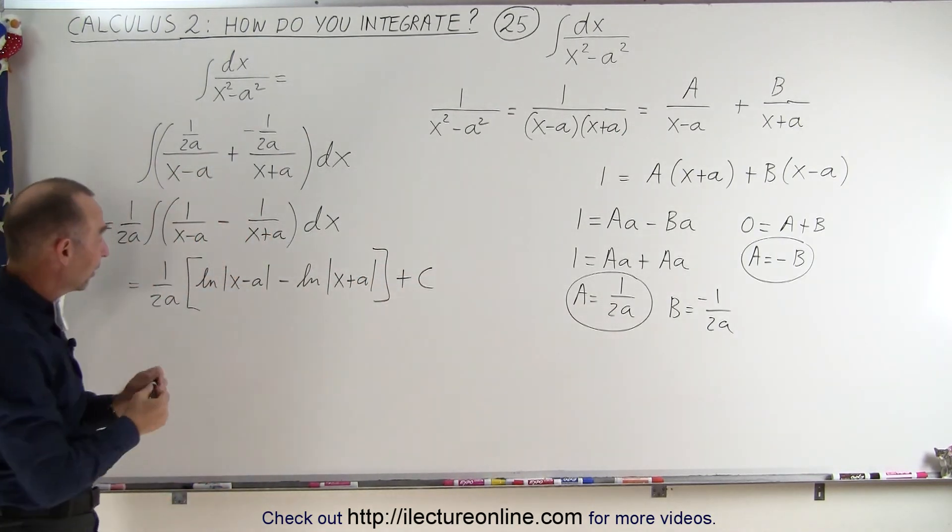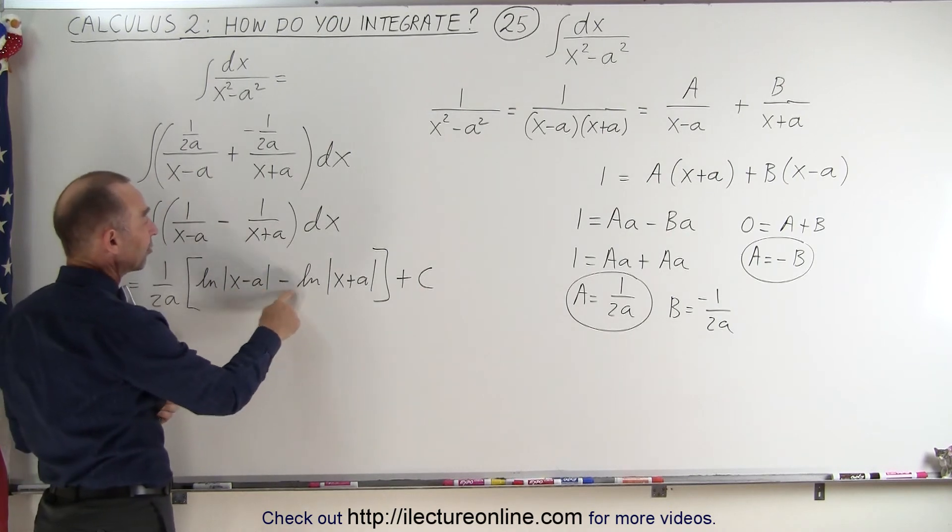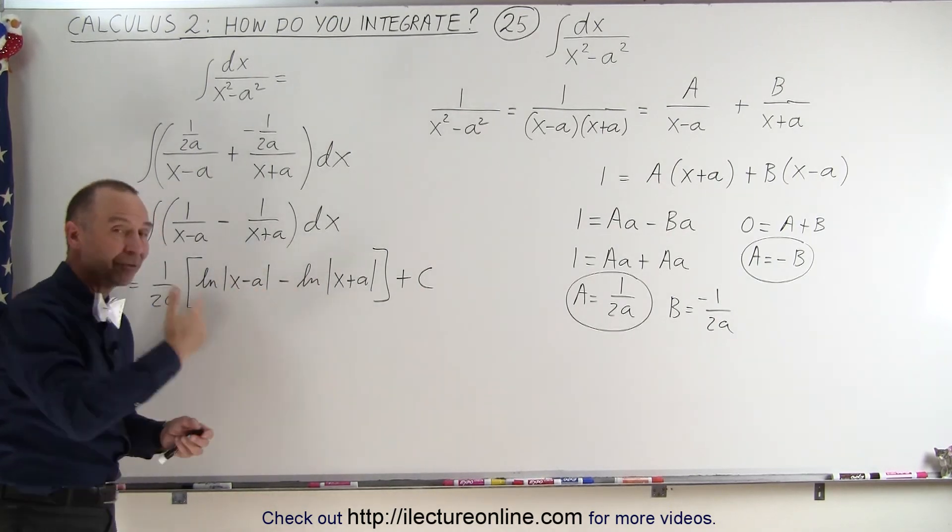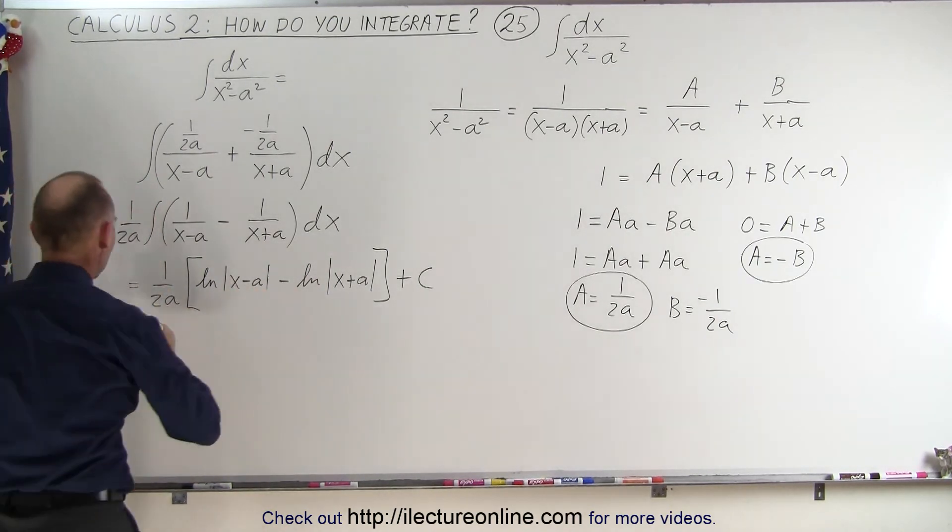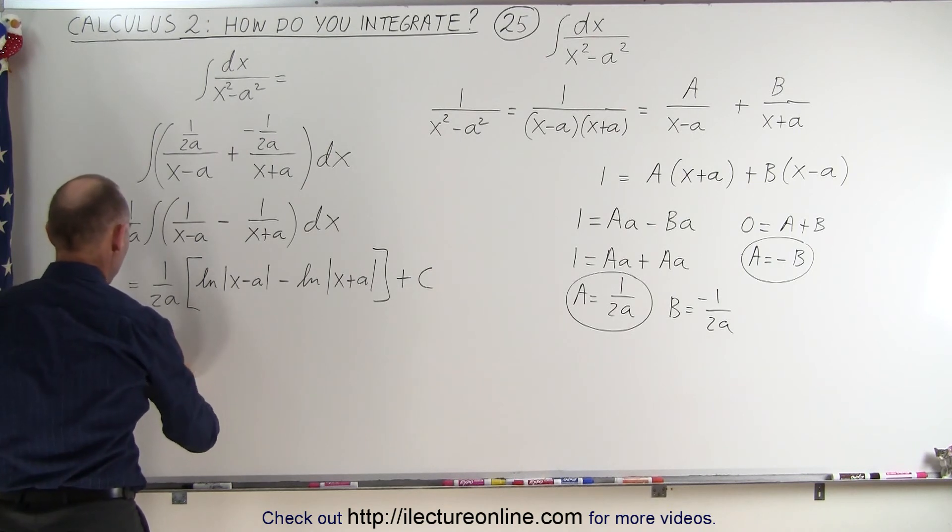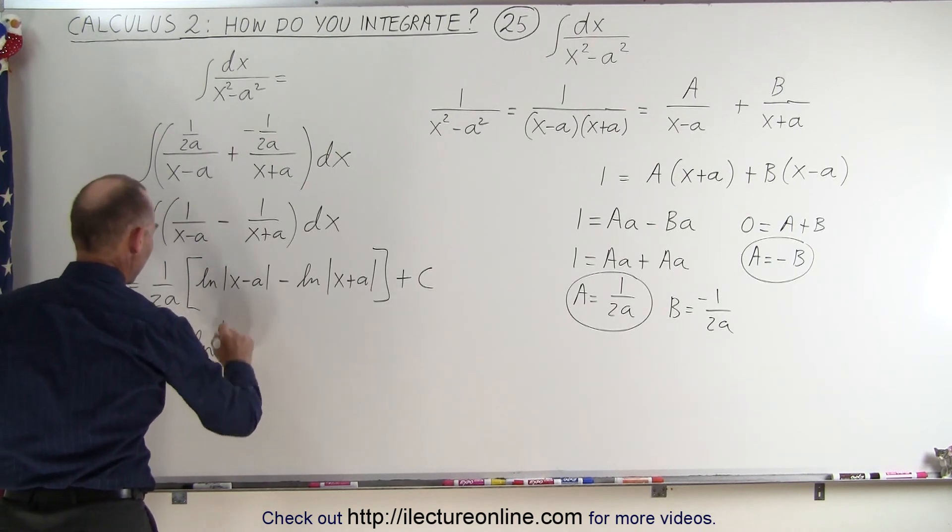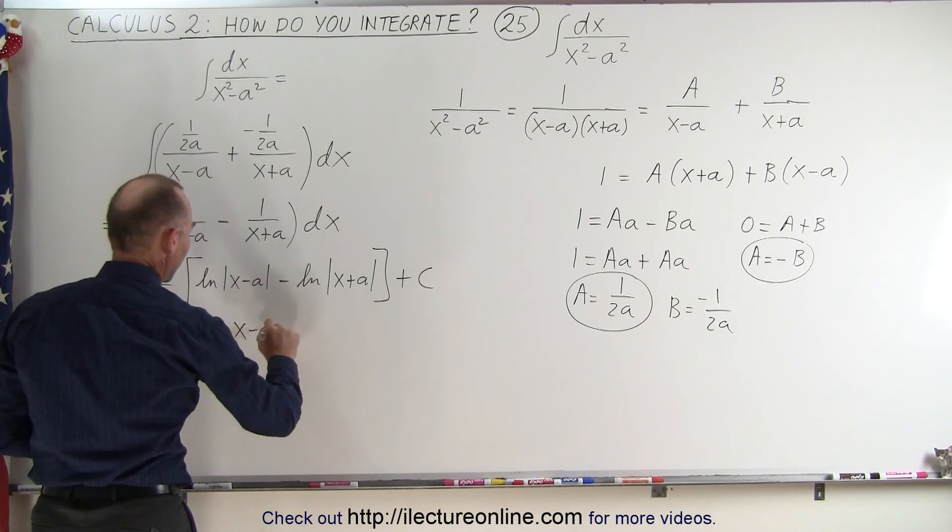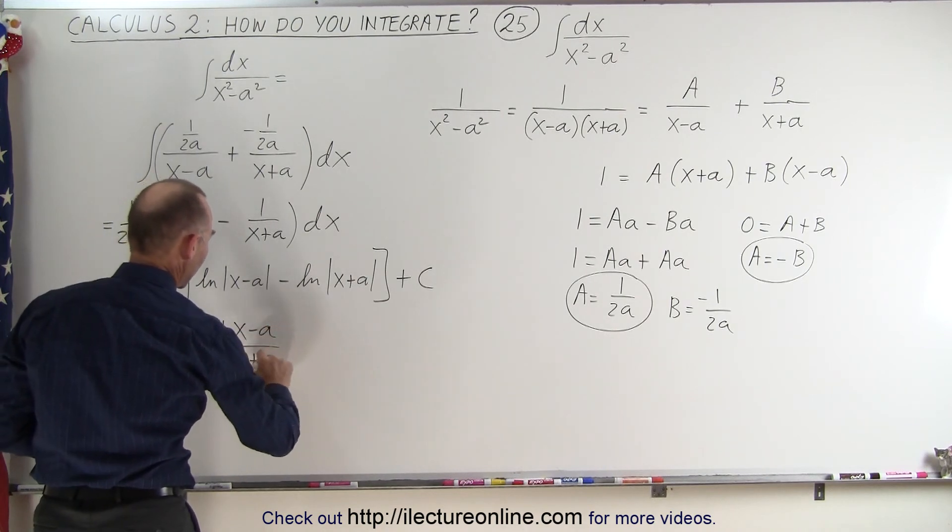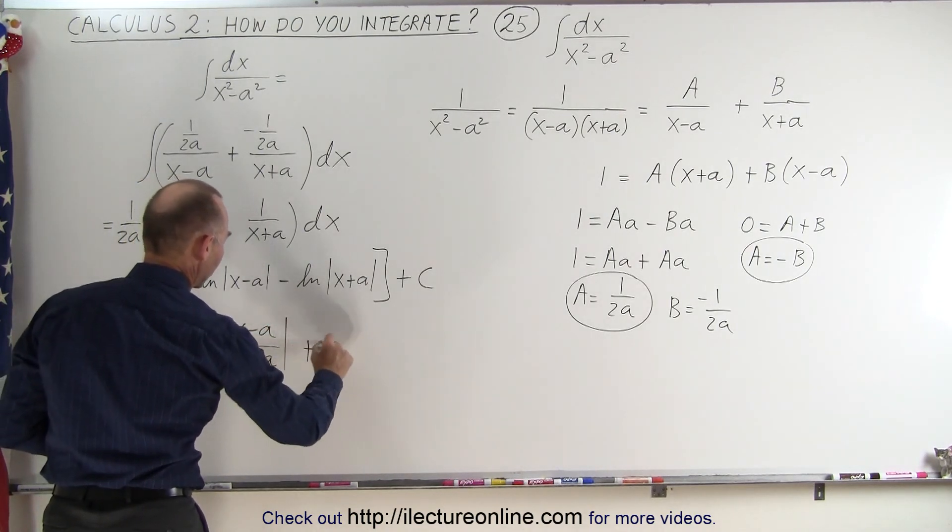And again, the rule is that we have the natural log of a minus the natural log of b. That's simply the natural log of a over b. So we can write this as 1 over 2a times the natural log of x minus a over x plus a, and a constant of integration.